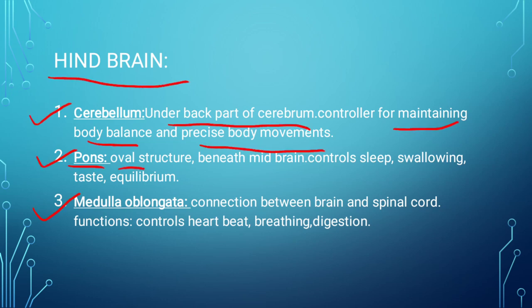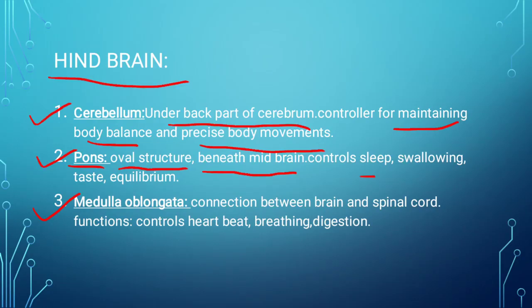The second part of the hindbrain is the pons. If we look at the shape of the pons, it is an oval structure — oval like the shape of an egg. Its location is beneath the midbrain. Its functions include controlling sleep, swallowing, taste, and equilibrium — meaning our balance. Actions like swallowing food and sleeping are all controlled by the pons.